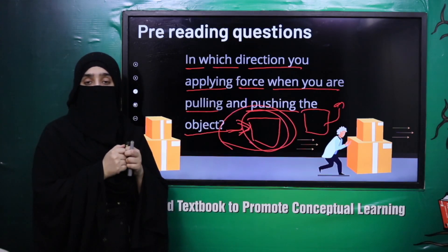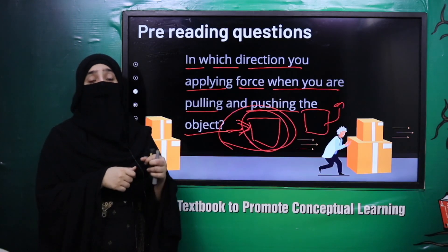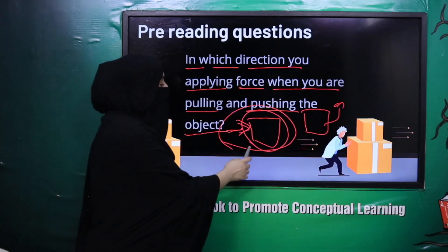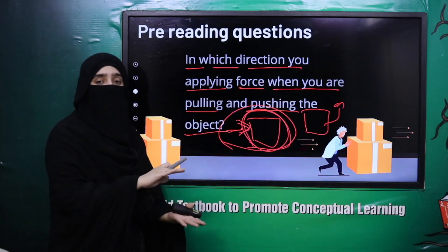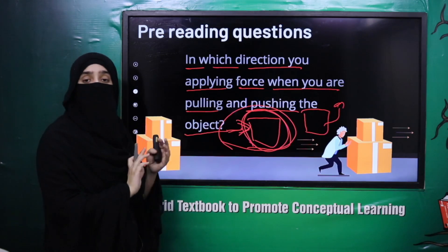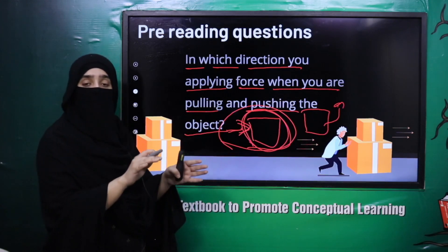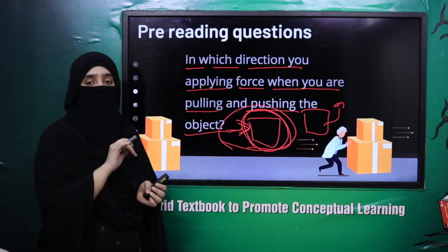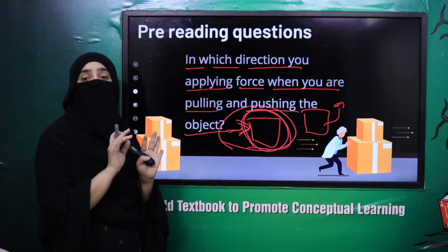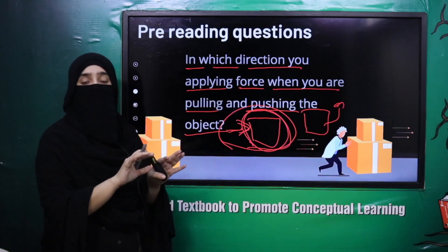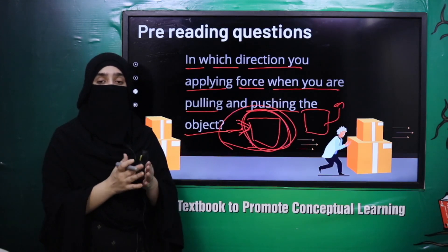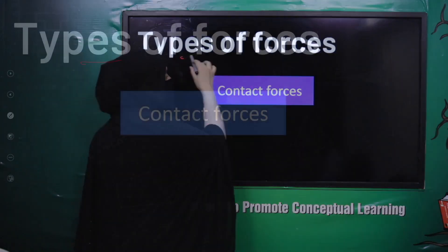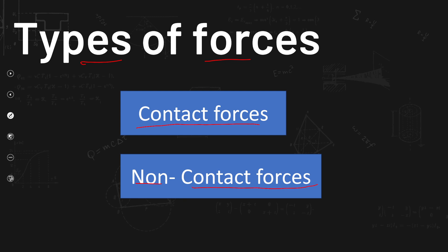When you pull an object toward yourself, you apply force in the direction of motion — because the object's motion is toward you, and force is applied in that direction. Additionally, when you push an object along the floor, the floor also applies a force on the object — that is frictional force. Muscles also apply force — that is muscular force. So let's see which category these forces — frictional, muscular, mechanical — belong to: contact or non-contact.